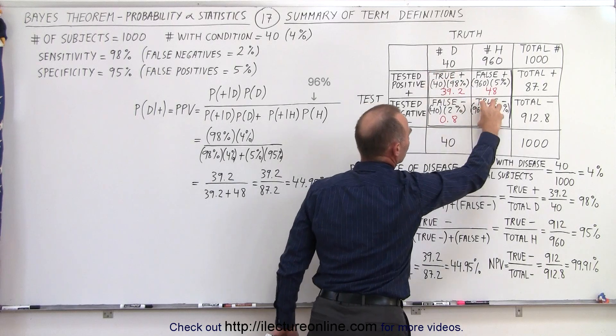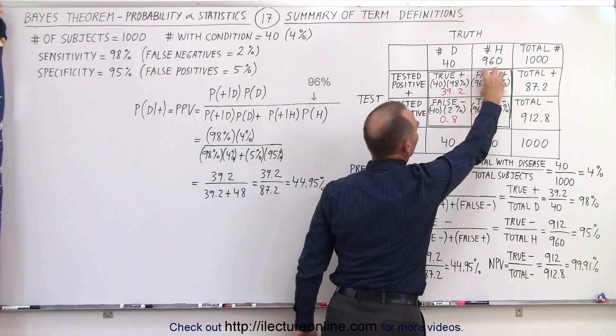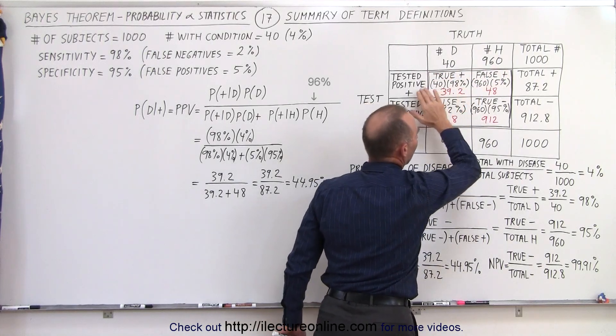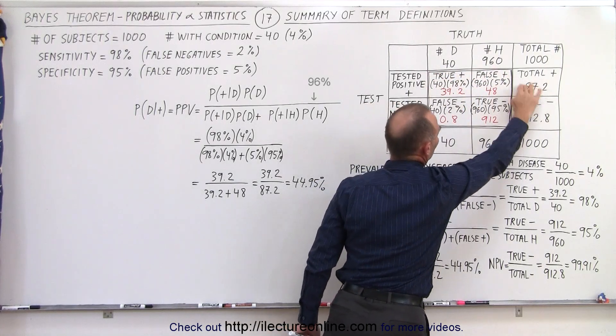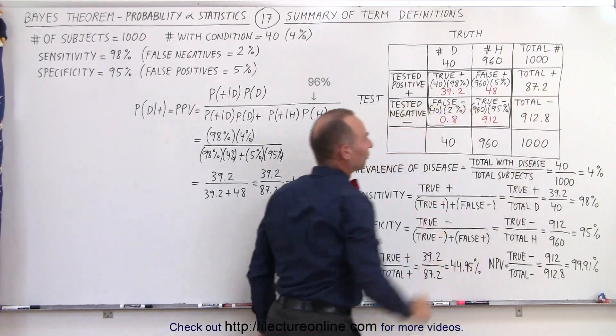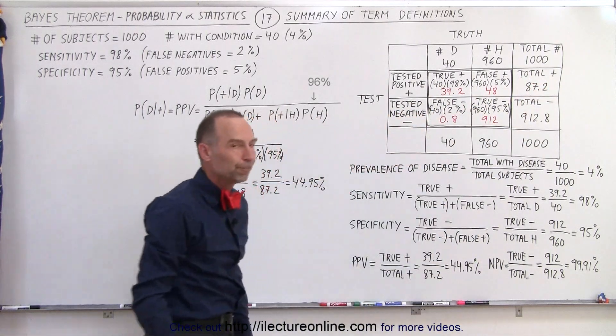The true positives, true negatives, false positives, and false negatives add up to the total number of positives and the total number of negatives.